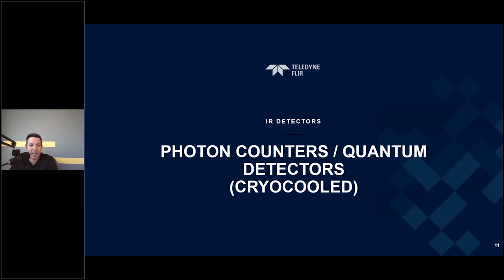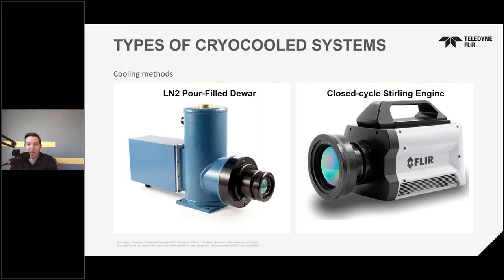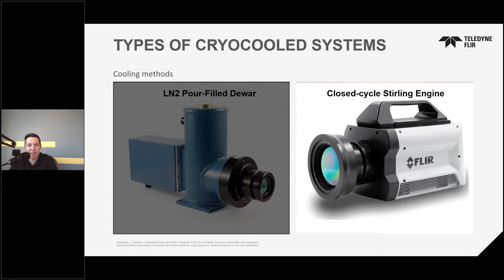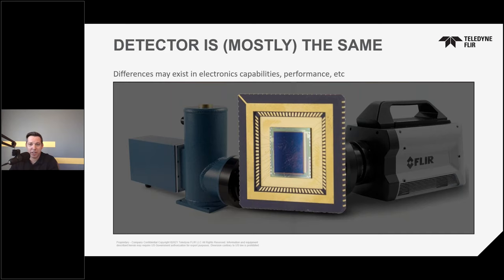This brings us to photon counters. Before we get into the detector, I want to address what you might think of when it comes to a cryo-cooled system. On the left is your classic pour-filled Dewar cooled by liquid nitrogen. On the right is an example of a closed-cycle Stirling cooler — a Stirling engine, helium-powered. For the following slides, I'll be talking about the closed-cycle cooling system, but the focus is on the detector itself, not the cooling methodology. The detector is what makes the difference in frame rate and other higher-performance capabilities, and it's largely the same regardless of cooling method, though there may be performance differences based on the electronics package and ROIC used.